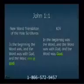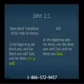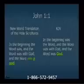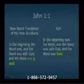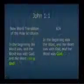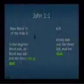In John 1, verse 1, the New World Translation — the Bible of the Jehovah's Witnesses — says: 'In the beginning the Word was, and the Word was with God, and the Word was a God.' Whereas the King James says: 'In the beginning was the Word, and the Word was with God, and the Word was God.' So Jesus was God in the King James, but a lesser being with a lowercase 'g' in the New World Translation.